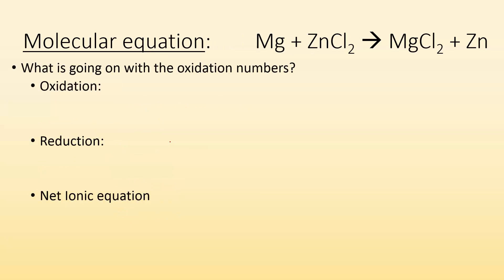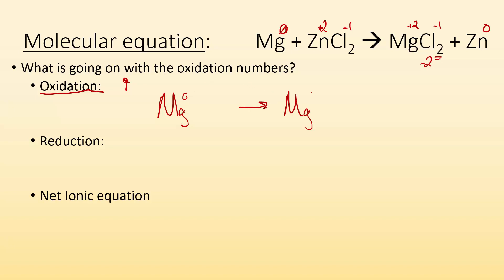Molecular equations — let's look at what's happening with the oxidation numbers. Mg by itself is zero. Cl is minus one, there are two of them, so zinc must be plus two. In the products, Cl is still minus one, so with two chlorines I have minus two, meaning Mg has to be plus two. Zinc by itself is zero. What was being oxidized? Mg went from zero to Mg²⁺ — it lost two electrons. Those two electrons go on the product side as the oxidation half-reaction.